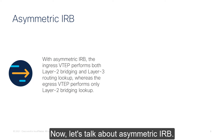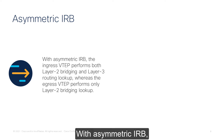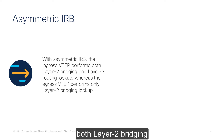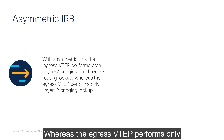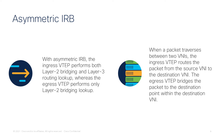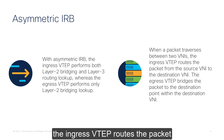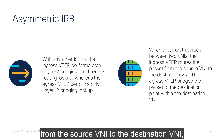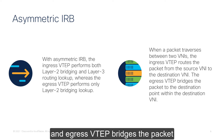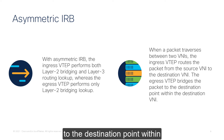Now let's talk about asymmetric IRB. With asymmetric IRB, the ingress VTEP performs both layer 2 bridging and layer 3 routing lookup, whereas the egress VTEP performs only the layer 2 bridging lookup. When a packet traverses between two VNIs, the ingress VTEP routes the packet from the source VNI to the destination VNI, and the egress VTEP bridges the packet to the destination endpoint within the same destination VNI.